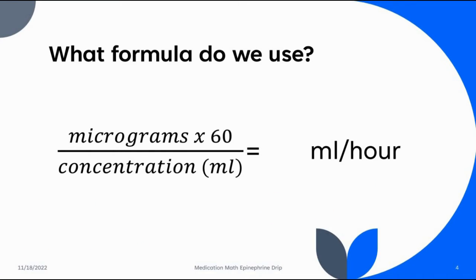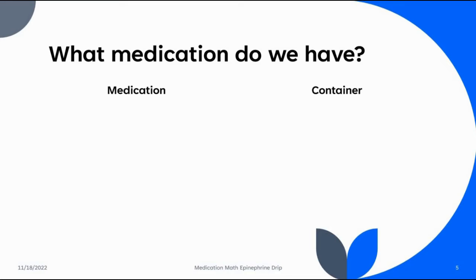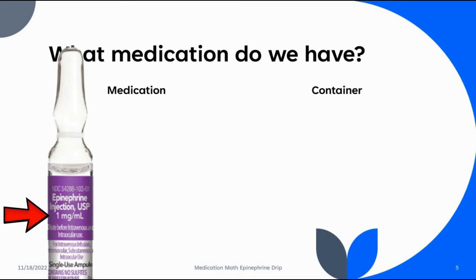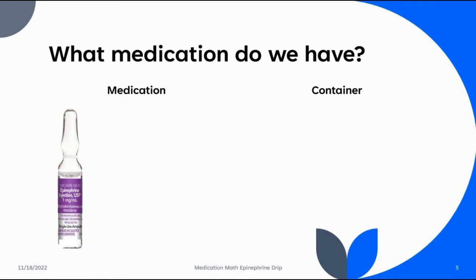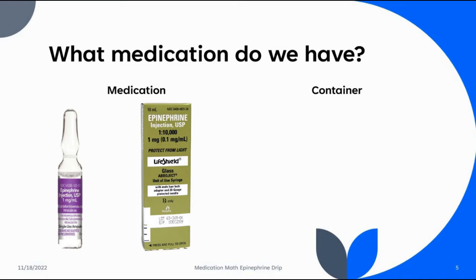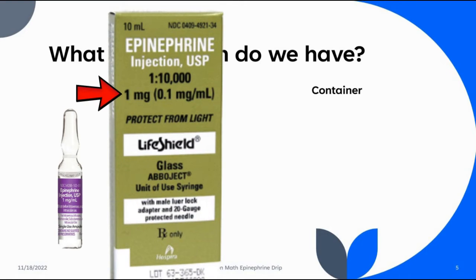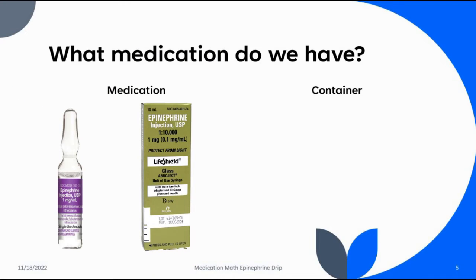What medications do we have on board that ambulance? We have this ampule of epinephrine that has one milligram of epinephrine in it. We also have cardiac epi, which is in a bigger vial, but it's still one milligram of epinephrine. It's just 10 milliliters more fluid. Does that throw the math off? We'll take a look at that in just a couple minutes.